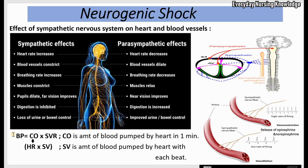Blood pressure also depends on cardiac output — the amount of blood pumped by the heart per minute, equal to heart rate times stroke volume. Due to sympathetic nervous system damage, heart rate drops. Stroke volume, the blood pumped per beat, also decreases because vasodilation causes blood to pool in the extremities, reducing venous return to the heart. So heart rate drops, stroke volume drops, cardiac output drops, and systemic vascular resistance drops — all leading to low blood pressure.